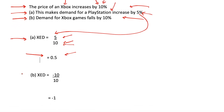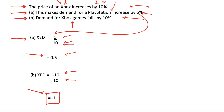For part B — the cross elasticity between Xboxes and Xbox games — demand for Xbox games falls by 10%, so we have minus 10% on the top, and 10% (the change in price of Xboxes) on the bottom. So XED is minus one. Note that this is negative because we had an increase in price of Xboxes but a decrease in demand for Xbox games. A negative XED means the goods are complements, since an increase in price of one causes a decrease in demand for the other.